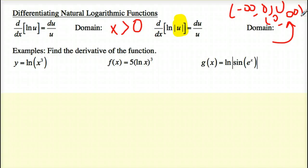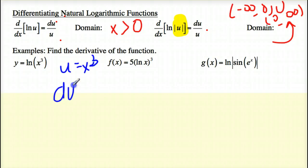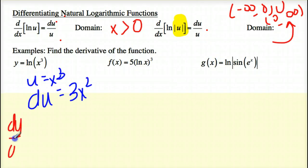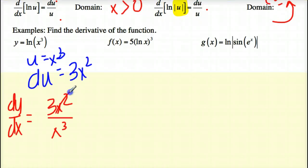Let's take a look at both of these derivatives. What I see is I do a u substitution, but on the bottom I use u, and the numerator is where I put the derivative of u. I'm going to set u to be whatever is after ln. In this case, u is x cubed. I'm just taking the derivative, so the derivative is 3x squared. So dy/dx equals du over u, which is 3x squared over x cubed. The x squared cancels, giving me 3 over x.